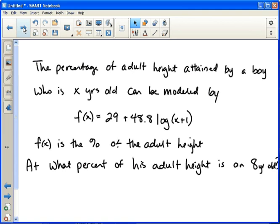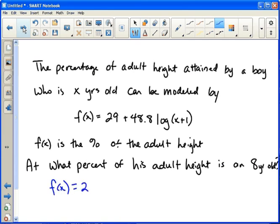Then they ask the question, at what percent of his adult height is an 8 year old? So all we need to do is plug in 8 for x. So we get f(x) equals 29 plus 48.8 log of (8+1). We plug in 8 for his age. If you plug this in your calculator, you get something in the neighborhood of 75. Meaning he's 75% of his adult height.